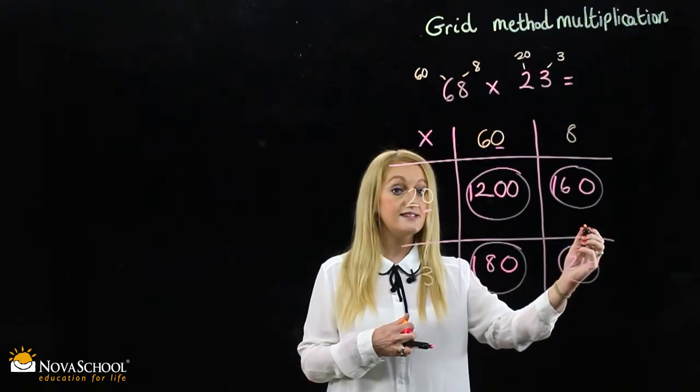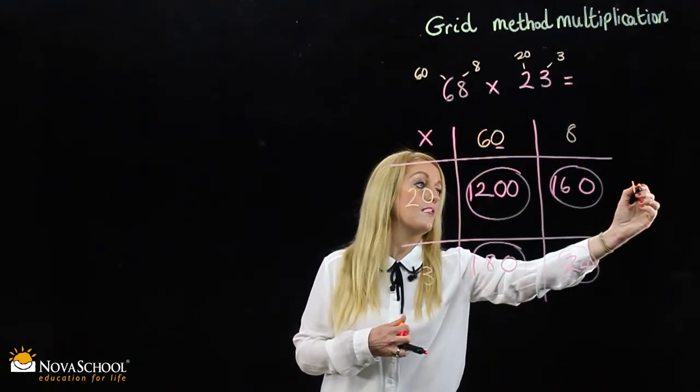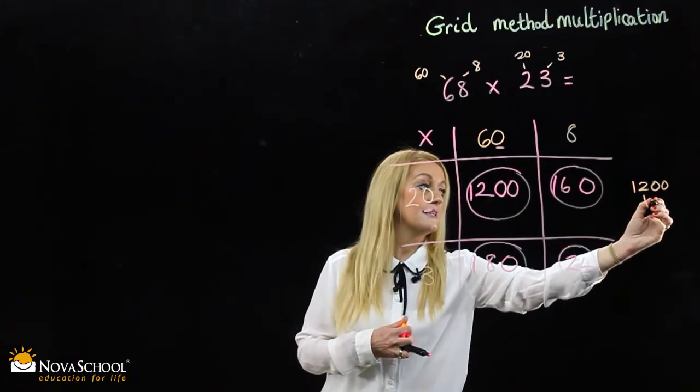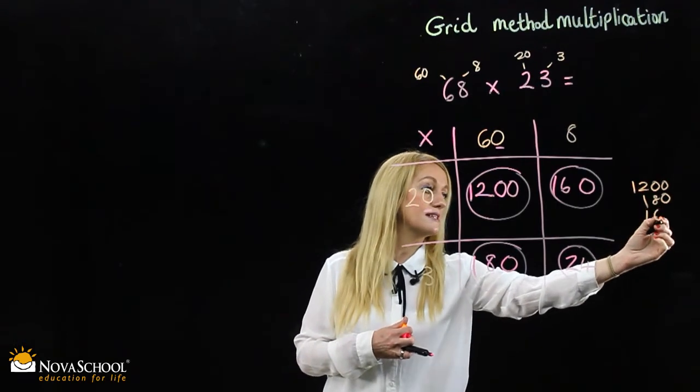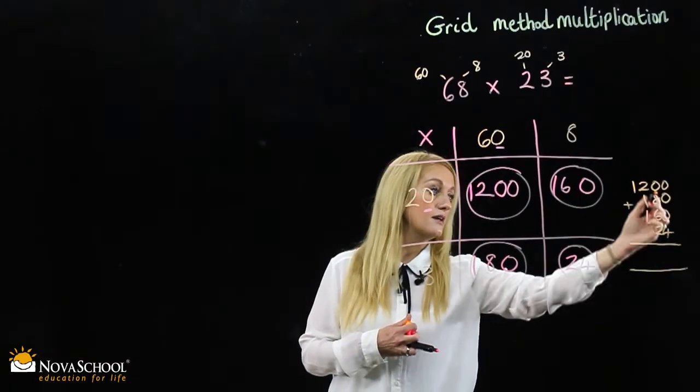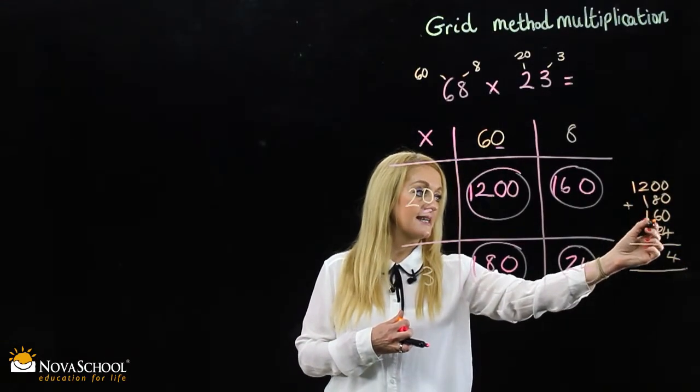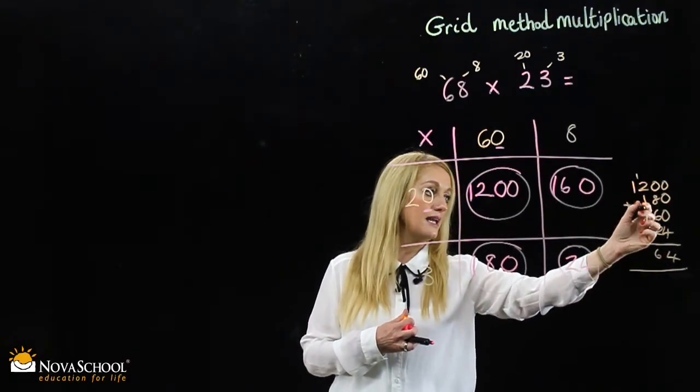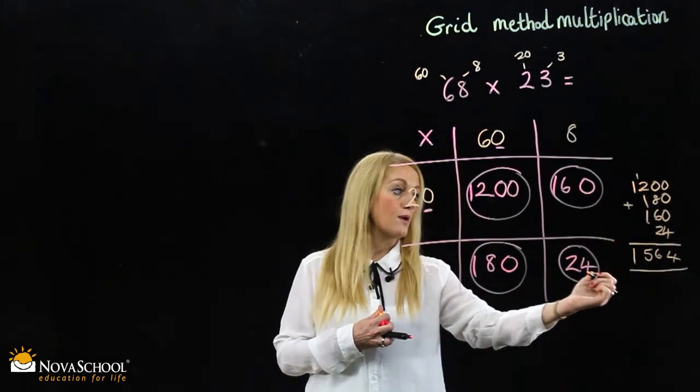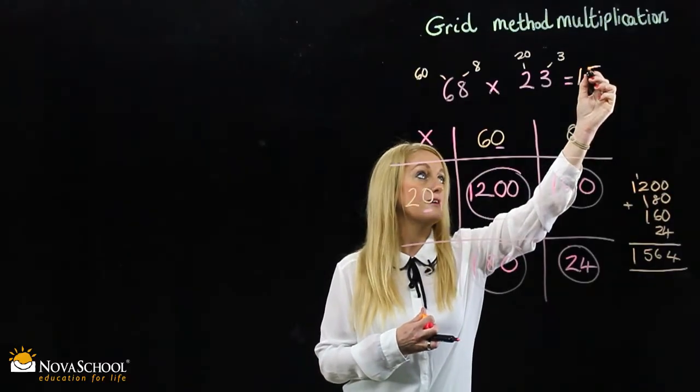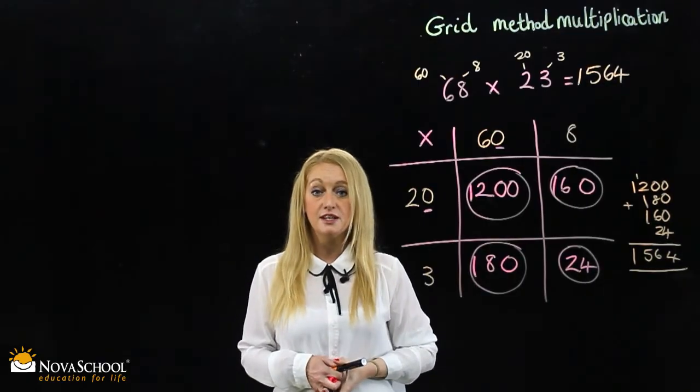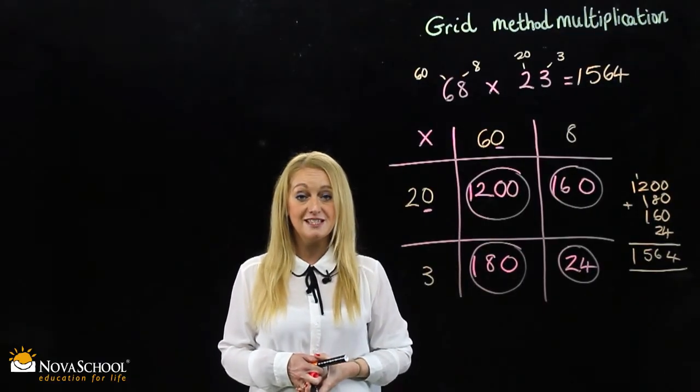Let's write it down. Place value, don't forget. So we have 1,200, add 180, add 160, add 24. Let's write down our final answer. 4, 8, add 6, add 2 is 16, 3, add 1, add 1, 5 and our final one here. So our final answer is 1,564 and that is multiplication with 2 digits multiplied by 2 digits using the grid.